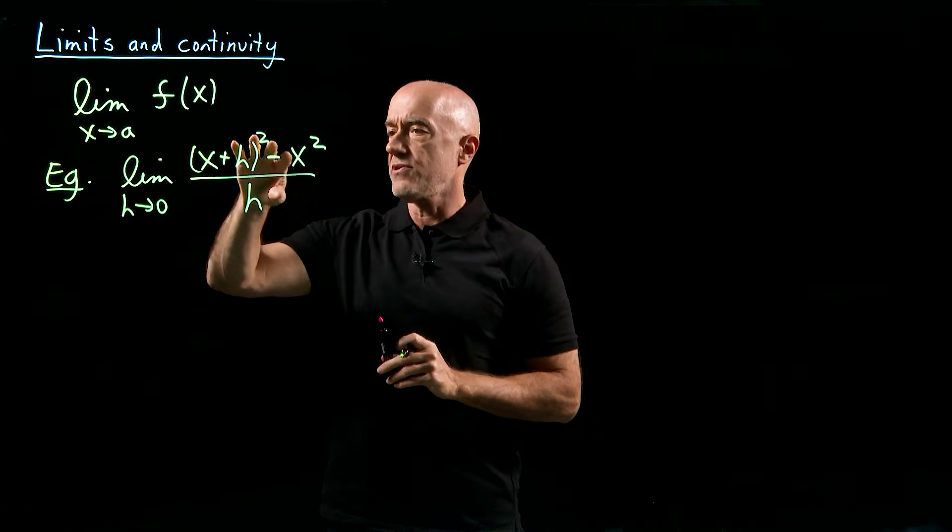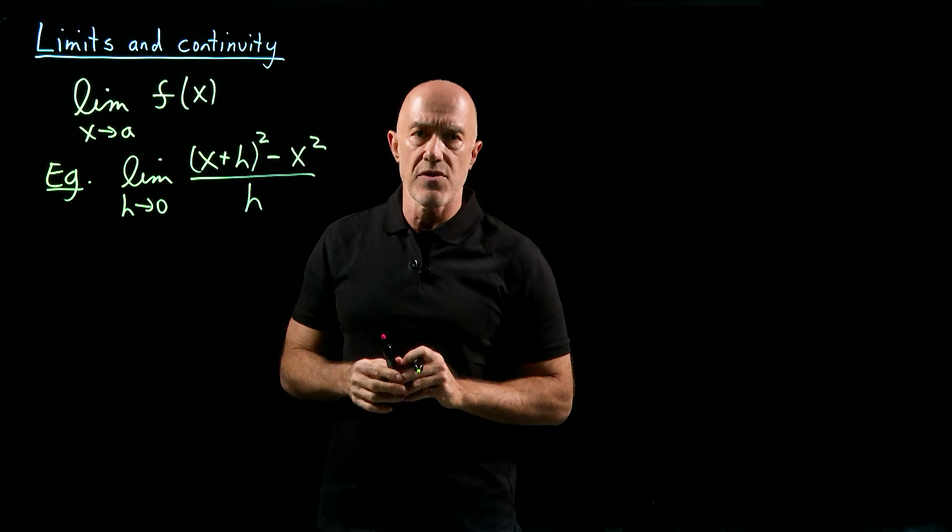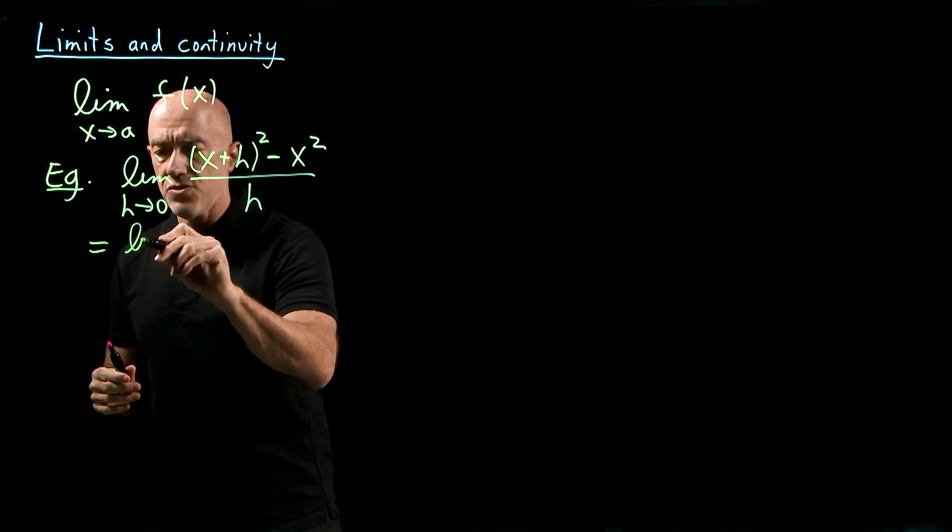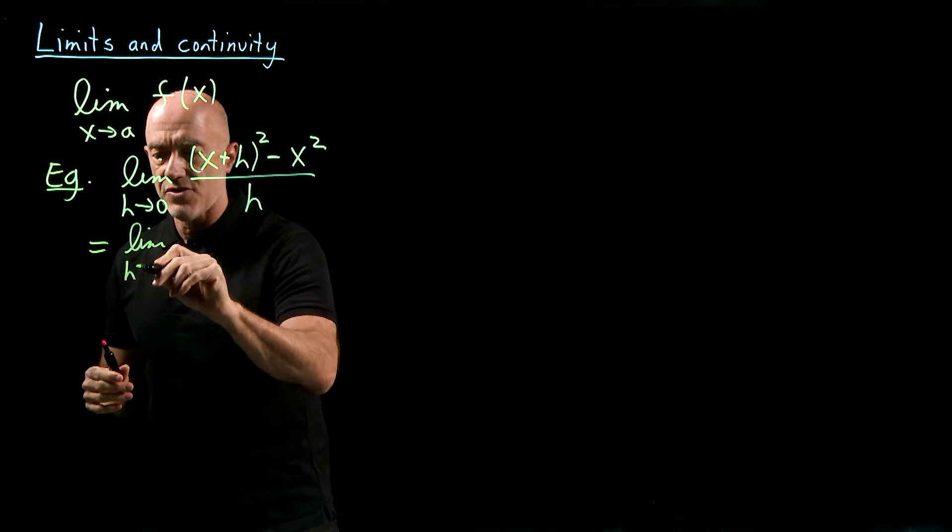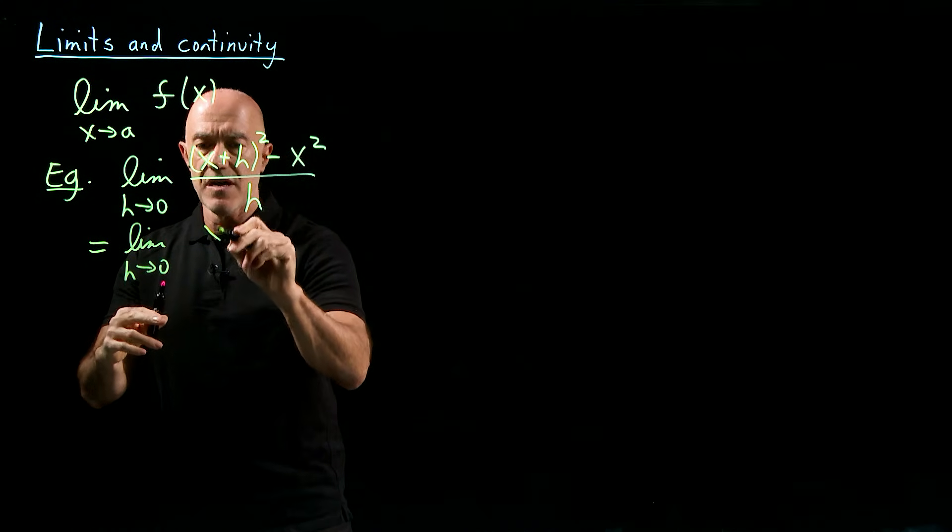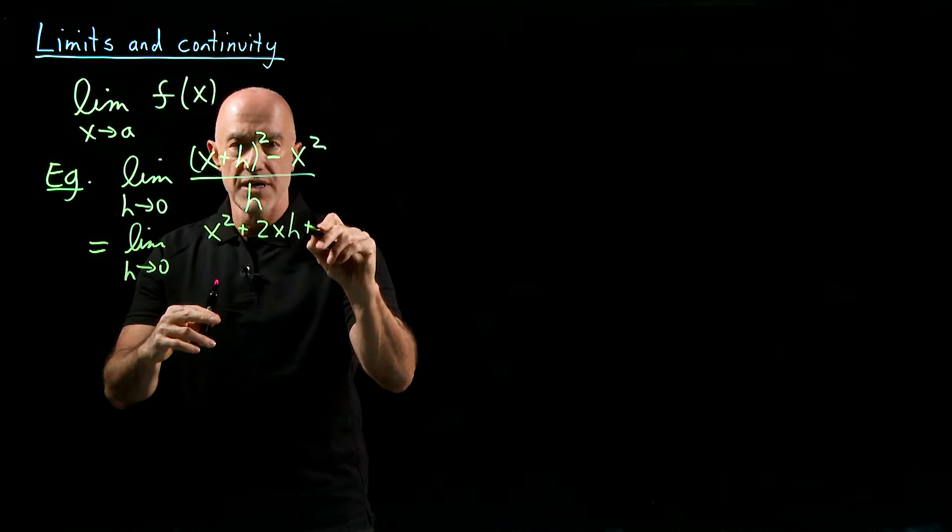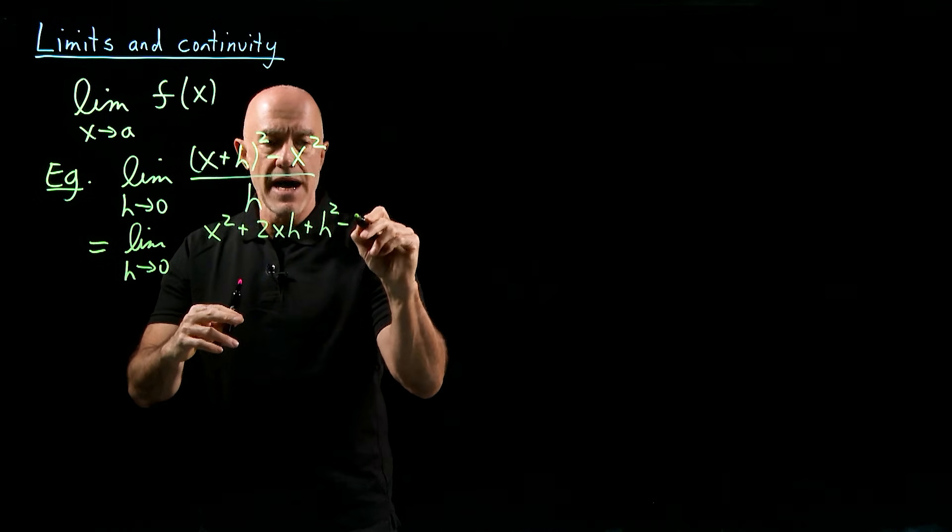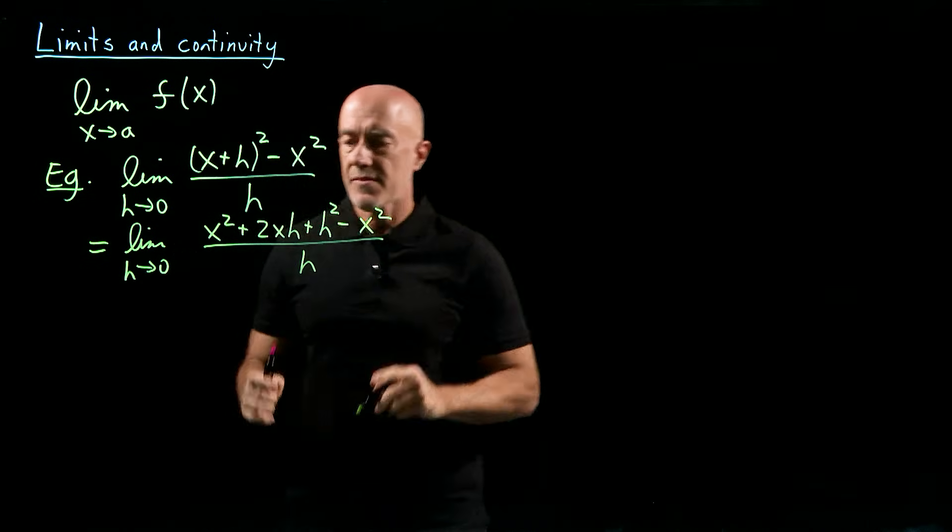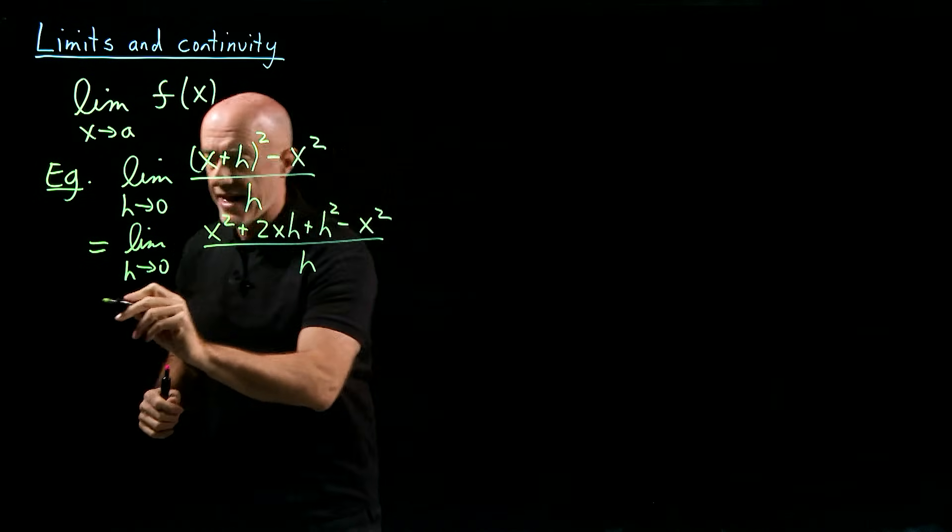So in order to determine what this limit is, we need to get rid of 0 over 0. To do that, we can do an expansion of this quadratic. So the limit as h goes to 0, this becomes x² + 2xh + h² - x² over h. The x² cancels and the h factors.